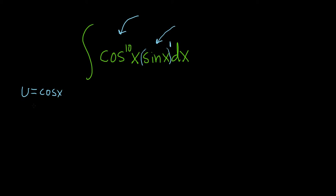So if u is equal to cosine, the derivative of u is negative sine x dx.